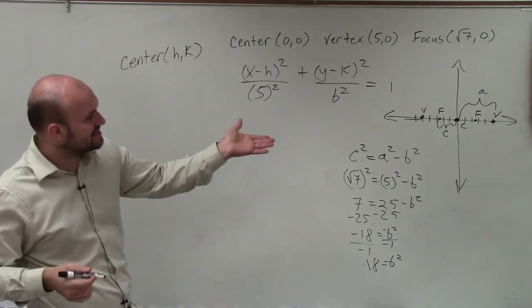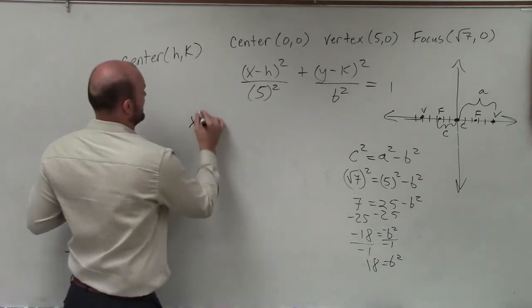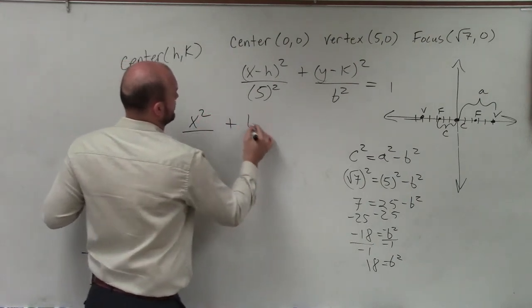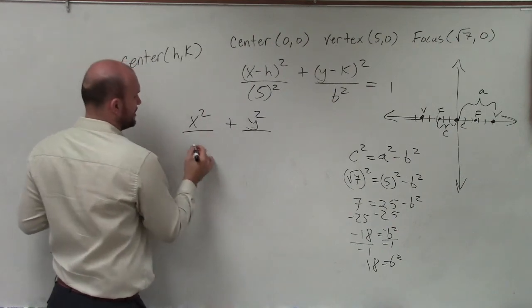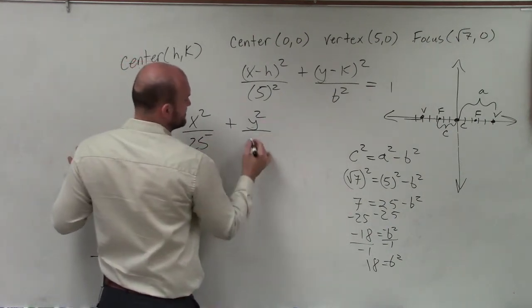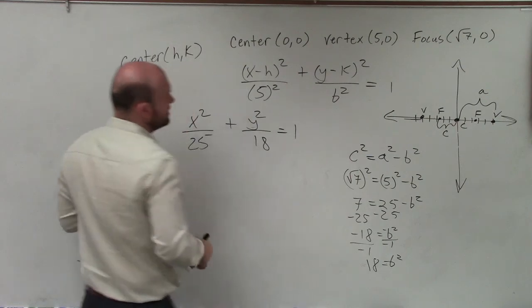So since the center is at 0, 0, I can now write x squared plus y squared, where a squared is going to be 5 squared, which is 25. And b squared, we've solved for is equal to 18 and equals 1.